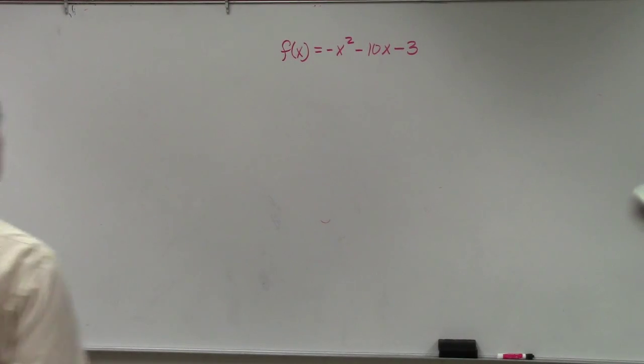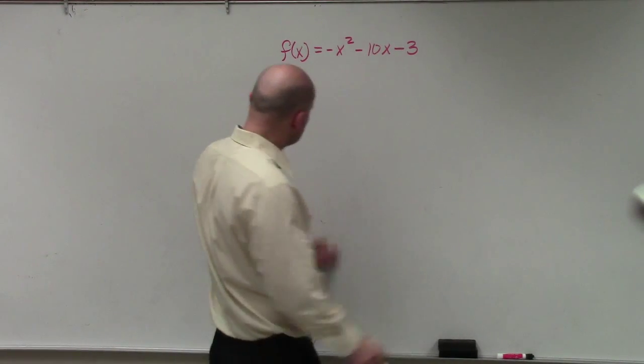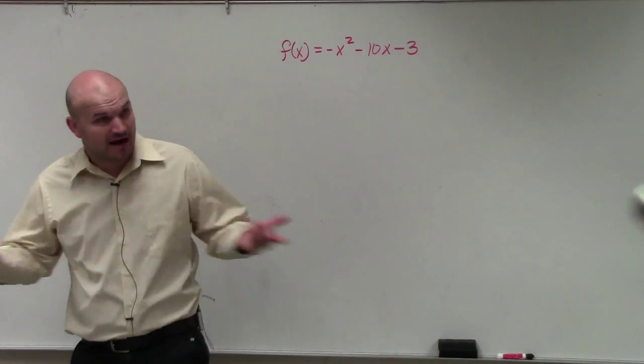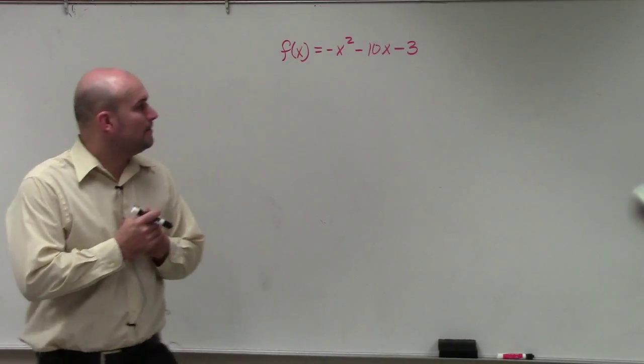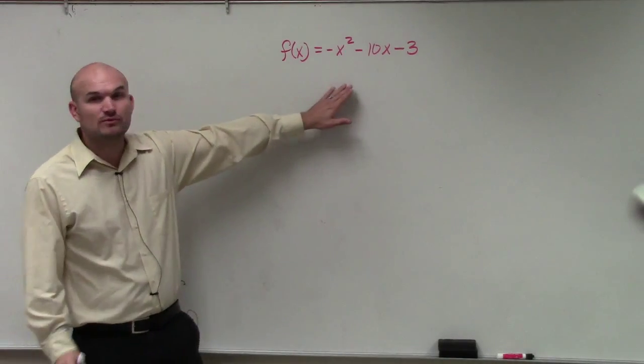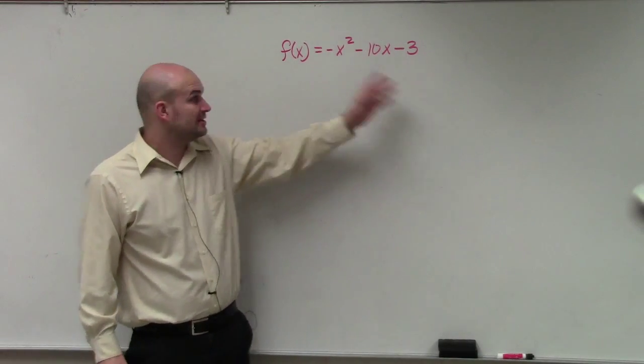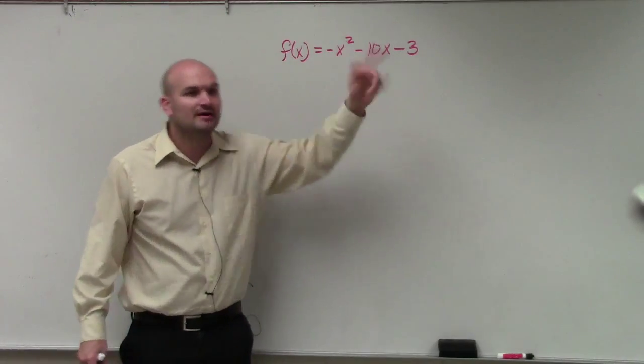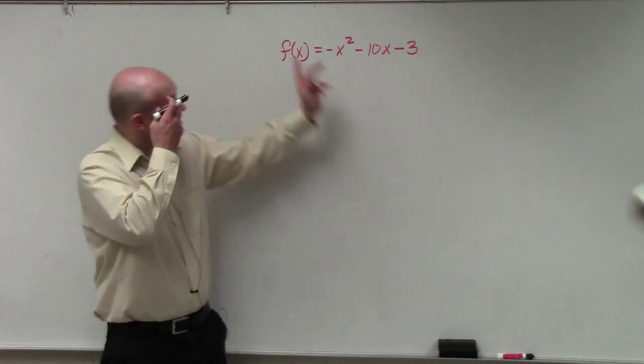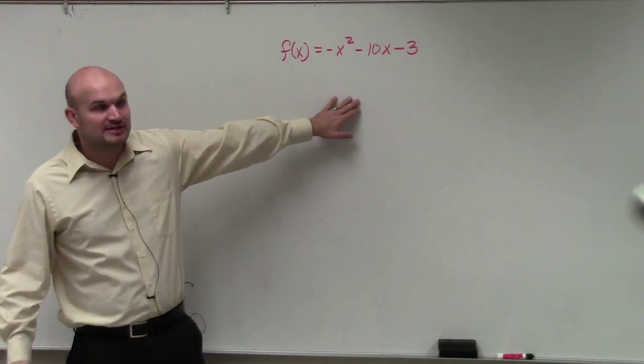So in this example, basically what they're asking you to do is to go ahead and find, to go ahead and graph it, right? Number 10, right? You're supposed to graph it. So basically, ladies and gentlemen, you could complete the square like we talked about last class period. You'd group them, factor out the negative 1, do b divided by 2 squared, add it inside, subtract it outside, and then go ahead and put it in vertex form.